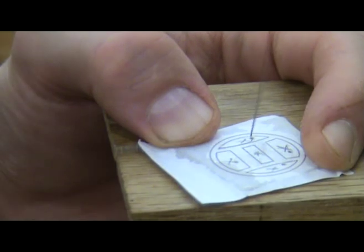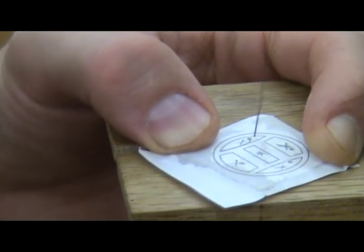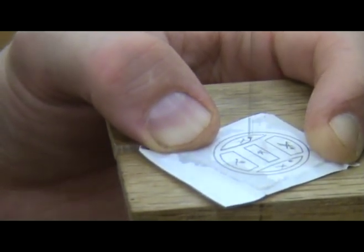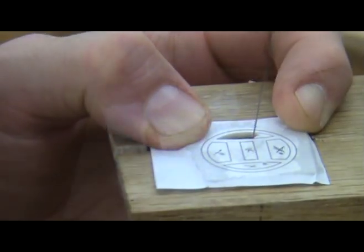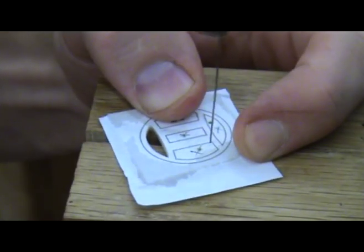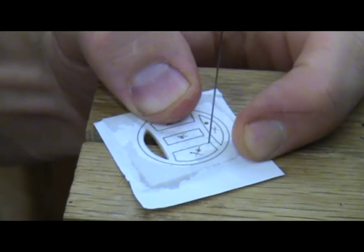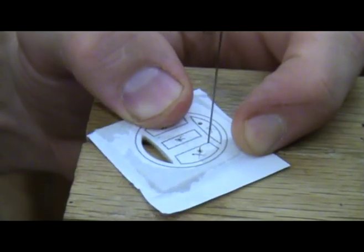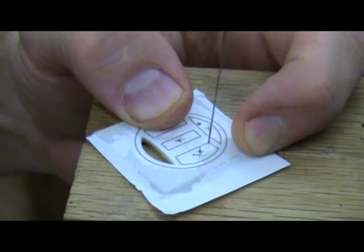The key when cutting is to keep the saw blade as vertical and as perpendicular to the pearl as possible. Try to use as much of the blade as you can too. This will greatly extend the life of the blade. When you get to a corner, you need to keep the saw moving while you make the turn. Ideally, the saw stays straight forward while you move the pearl with your other hand.